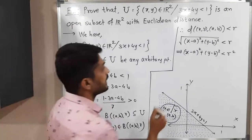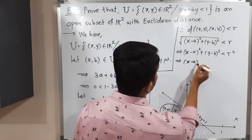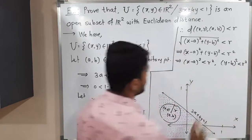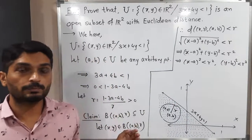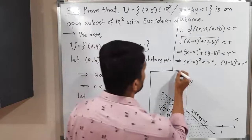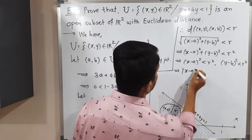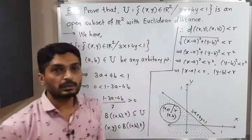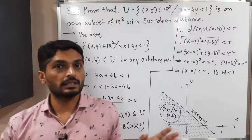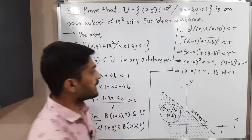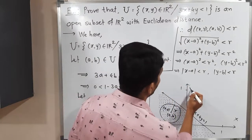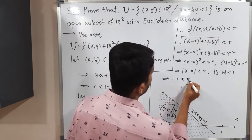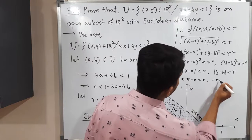Since each non-negative term's sum is less than r², each term individually is less than r²: (x−a)² < r² and (y−b)² < r². Taking positive square roots of both sides gives |x−a| < r and |y−b| < r. Using the result that |a| < b if and only if −b < a < b, we get: −r < x−a < r and −r < y−b < r.